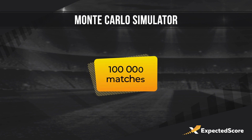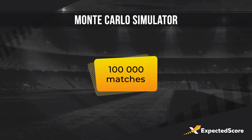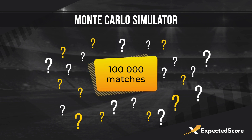This Monte Carlo simulator includes 100,000 matches, according to which we calculate probabilities. We created this version specially for the video. In our work we use a simulator consisting of 300,000 matches that calculates many more probabilities — for example, the probability to win a half. The results of this version can therefore be less accurate than our extended version, because 100,000 matches is still not enough. Now let's get to work.